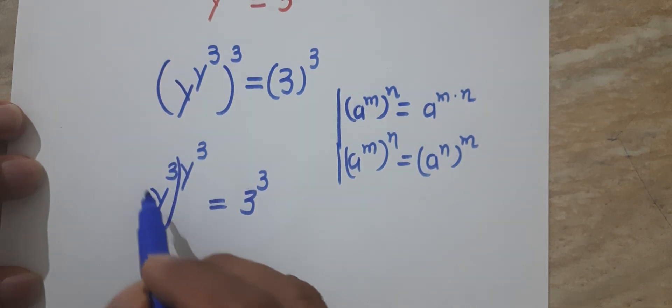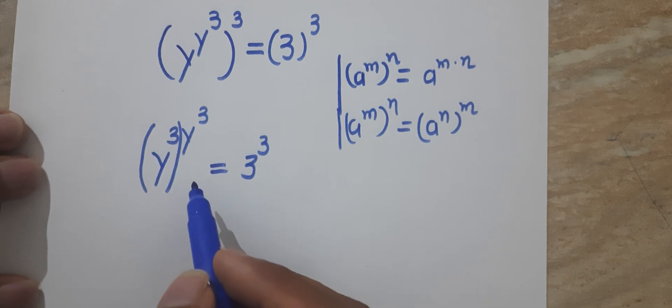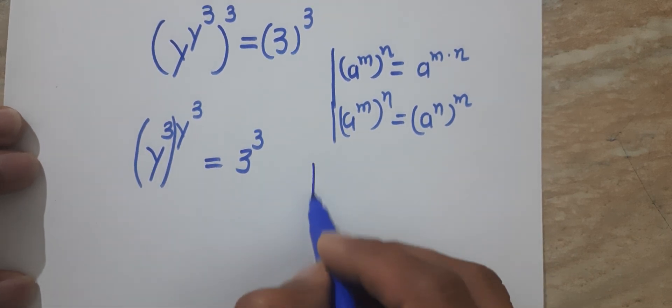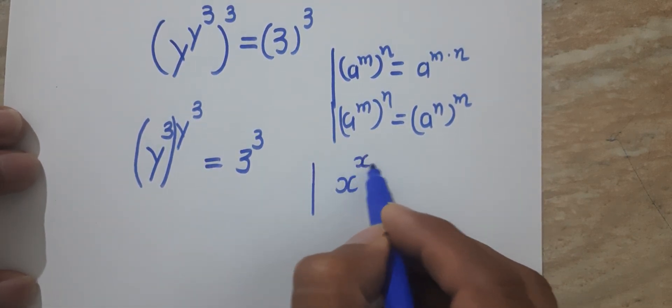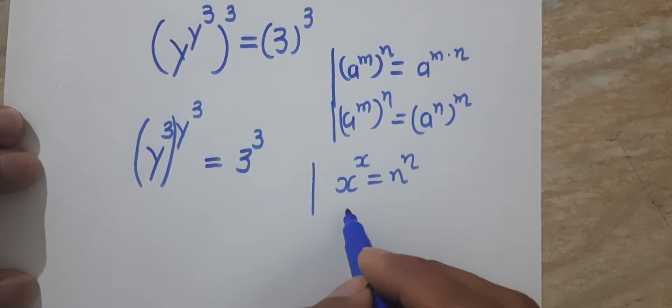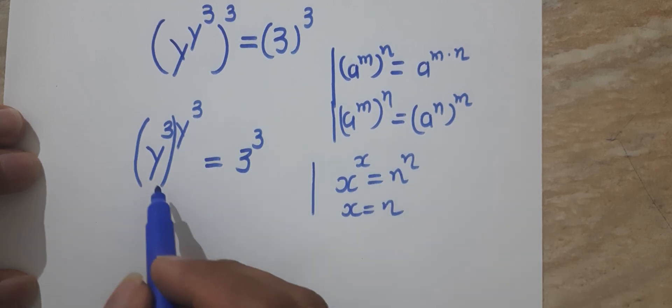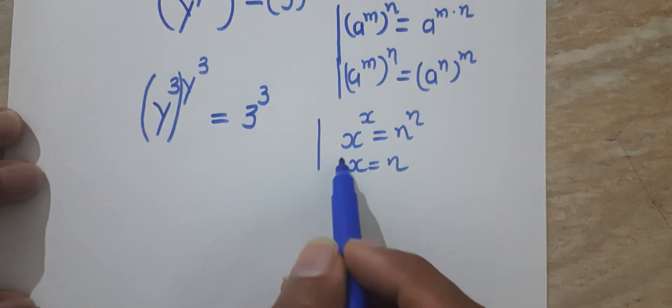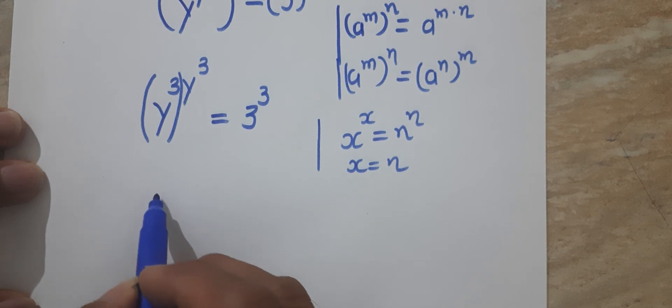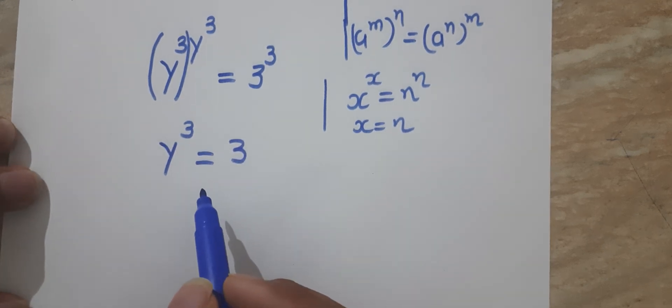Now we will separate out this y³. Here we have to apply another rule: x^x = n^n. When the situation is like this, we can write x = n. If we apply this rule, we can write y³ = 3.